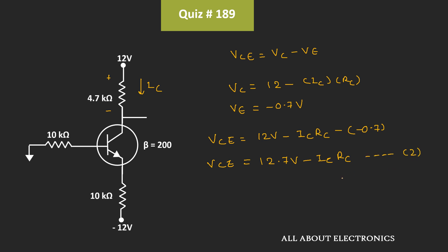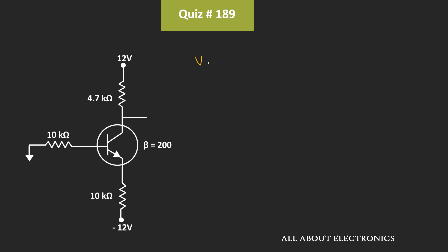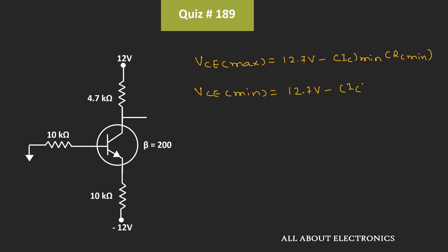We have been asked to find the maximum and minimum values of Vce. This voltage will be maximum when Ic and Rc are minimum, and it will be minimum when Ic and Rc are maximum. So the maximum value of Vce equals 12.7V minus Ic_min times Rc_min, and the minimum value of Vce equals 12.7V minus Ic_max times Rc_max.